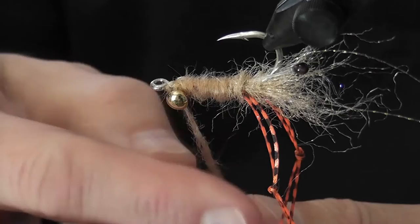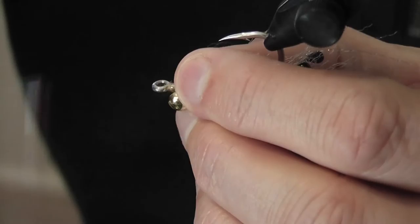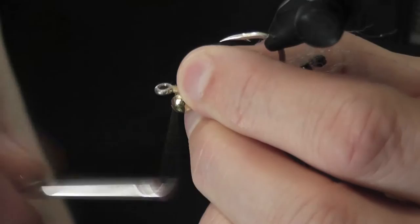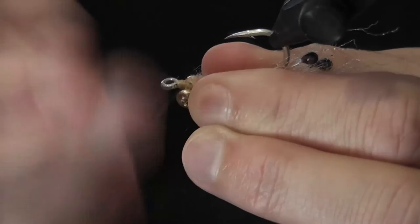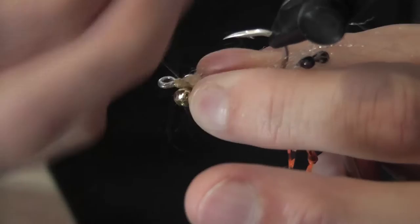And then once I've done that, that's it. We just finish off, pull all the dubbing forward, create a bit of a neat head. Whip finish. And another set. Think about where you're throwing these flies too because there's some pretty scary territory that you're going to be throwing these things into. So that's why I do so many whip finishes and then I also finish it off with a bit of the hydro as well.